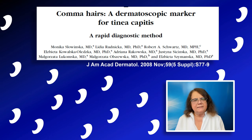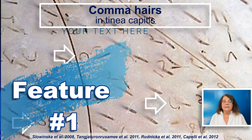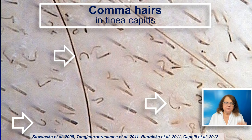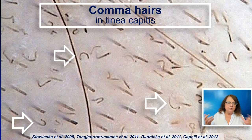There are now more typical features described, but still the comma hairs remain the most typical feature of tinea capitis. Here is a trichoscopy image with the arrows pointing to the comma hairs or c-shaped hairs, which are the typical feature of tinea capitis. If we see just one c-shaped or comma hair-shaped structure, this is not sufficient to make the diagnosis. But if, as in this image, we have a field of view full of comma hairs, we can be almost certain that this is tinea capitis.